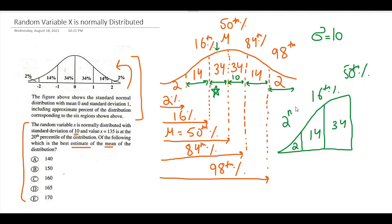So this is 16, and I don't know what value this is to be very honest, but I do know that somewhere to the right of this line there is a value X which is basically 135. And the question is interested in what is gonna be the estimated mean.